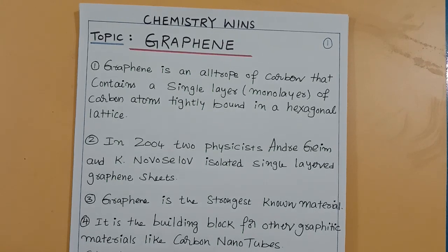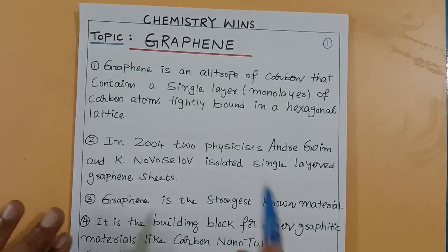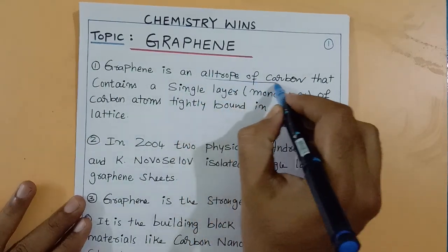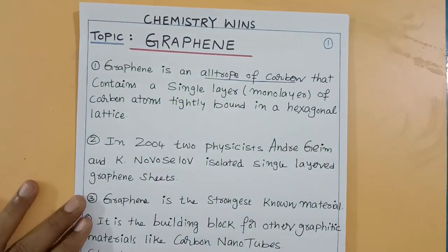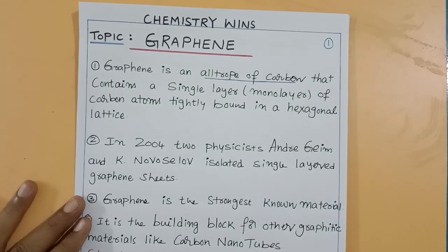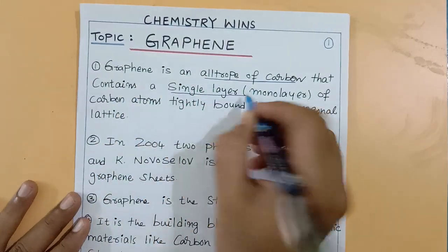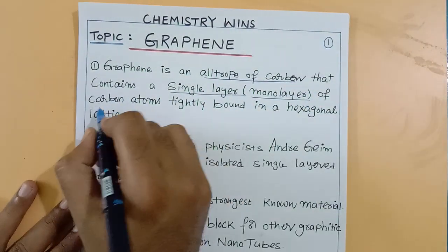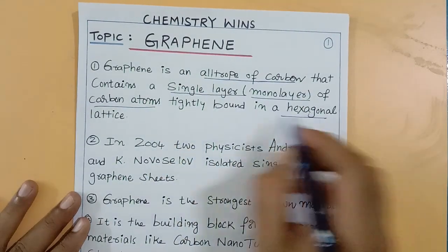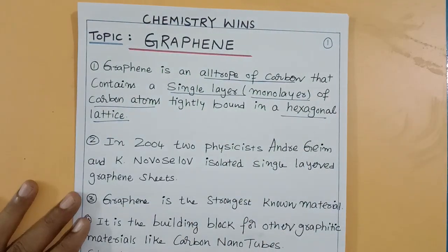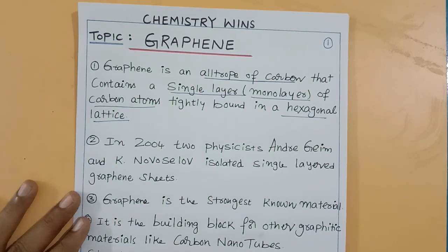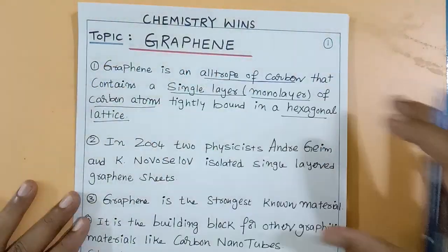Graphene is an allotrope of carbon — another form of carbon, just like diamond and graphite. It contains a single layer, a monolayer of carbon atoms, tightly bound in a hexagonal lattice. Graphene is a single-layered sheet of carbon atoms — single layer, not multi-layer.